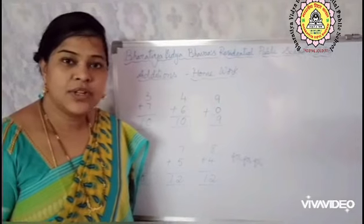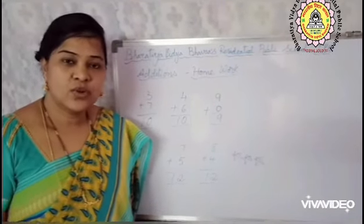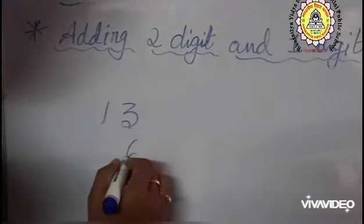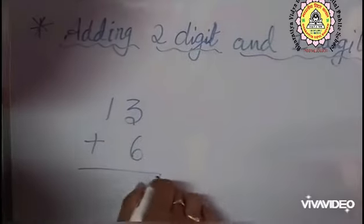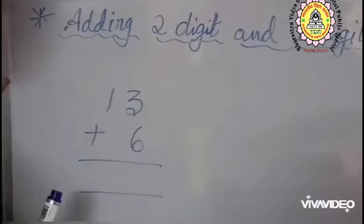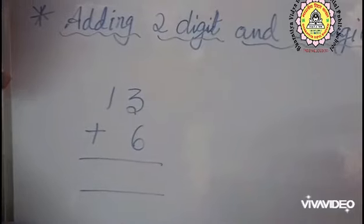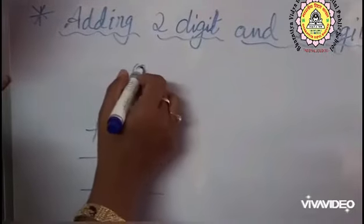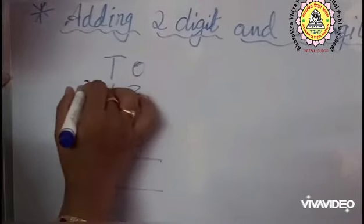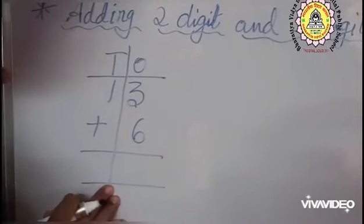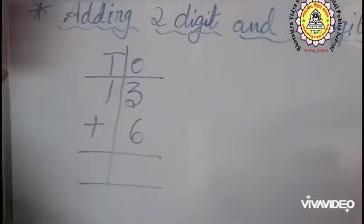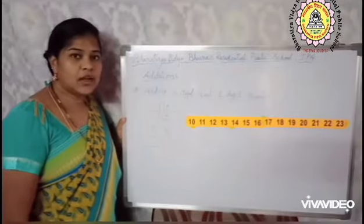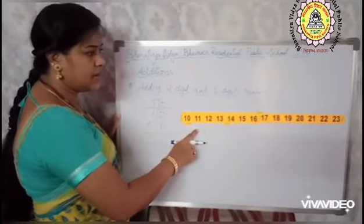Let us start today's class by adding 2-digit and 1-digit numbers children. 13 plus 6. See here, there are 2 numbers. Every number is having its own place value children. 3 is in 1's place and 1 is in 10's place. Now let us add these numbers with the help of a number line. Adding means counting forward. Let us count 6 steps forward by using the number line.